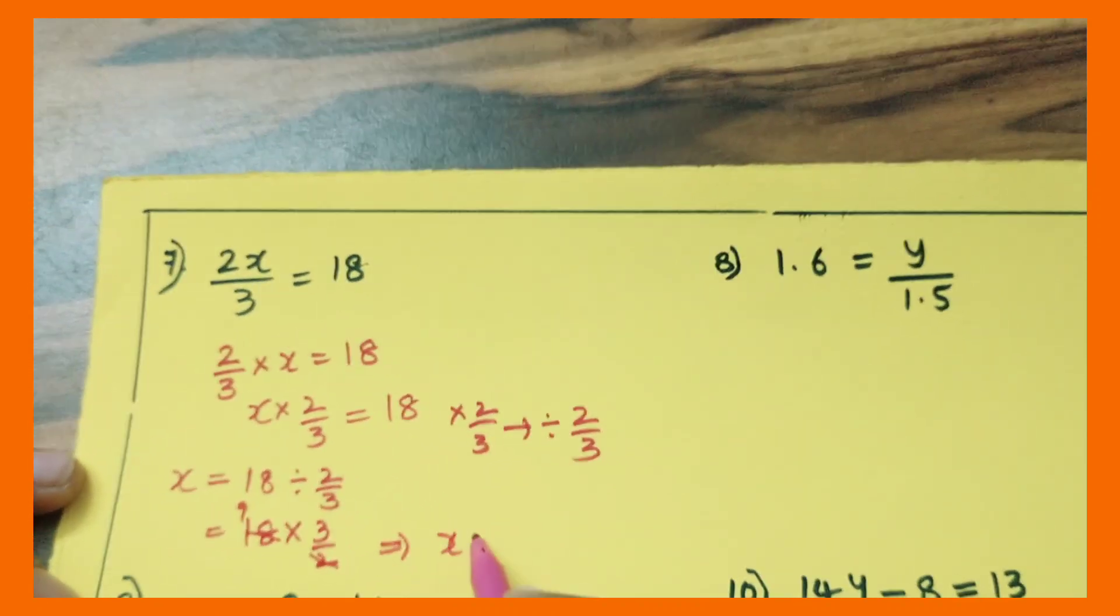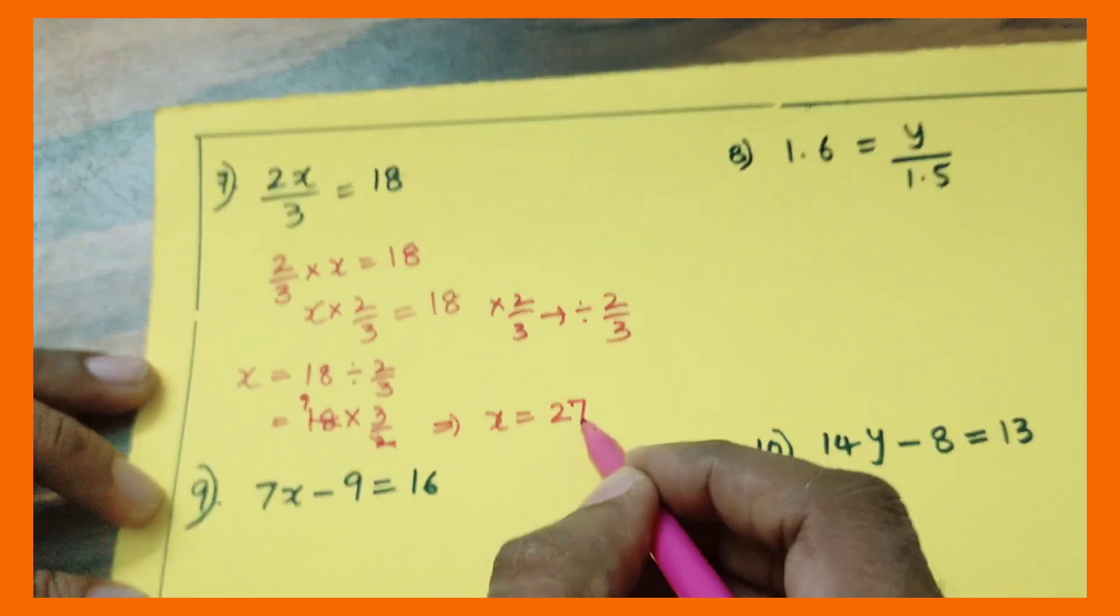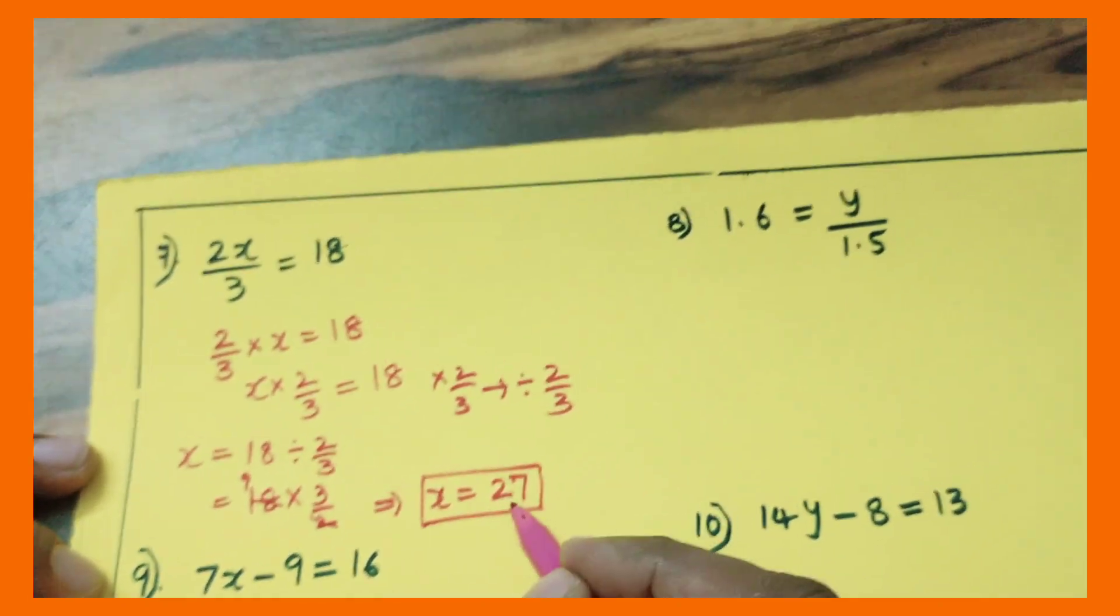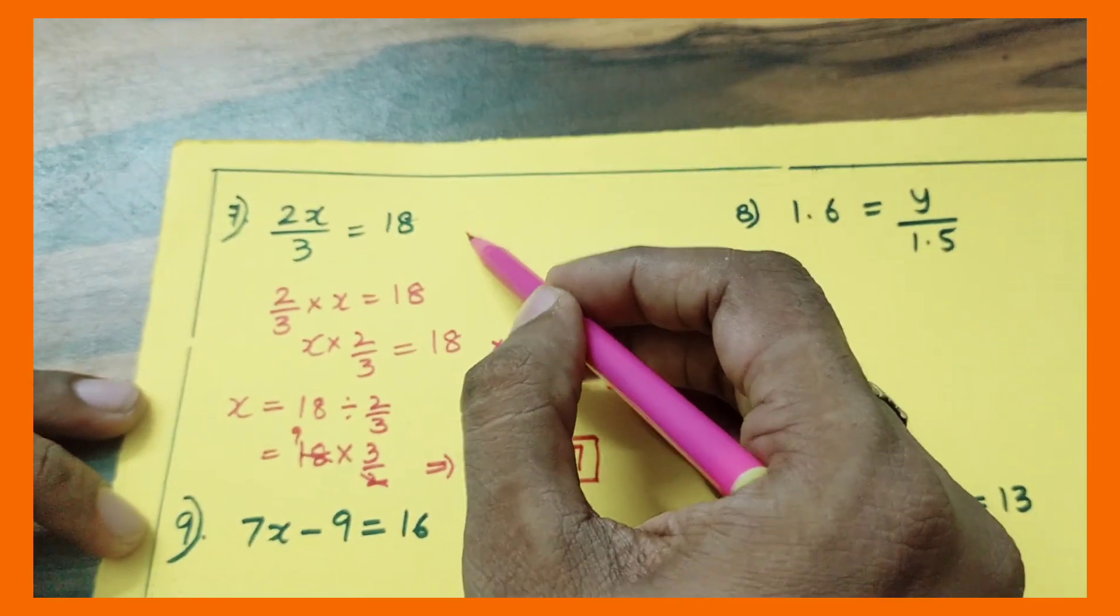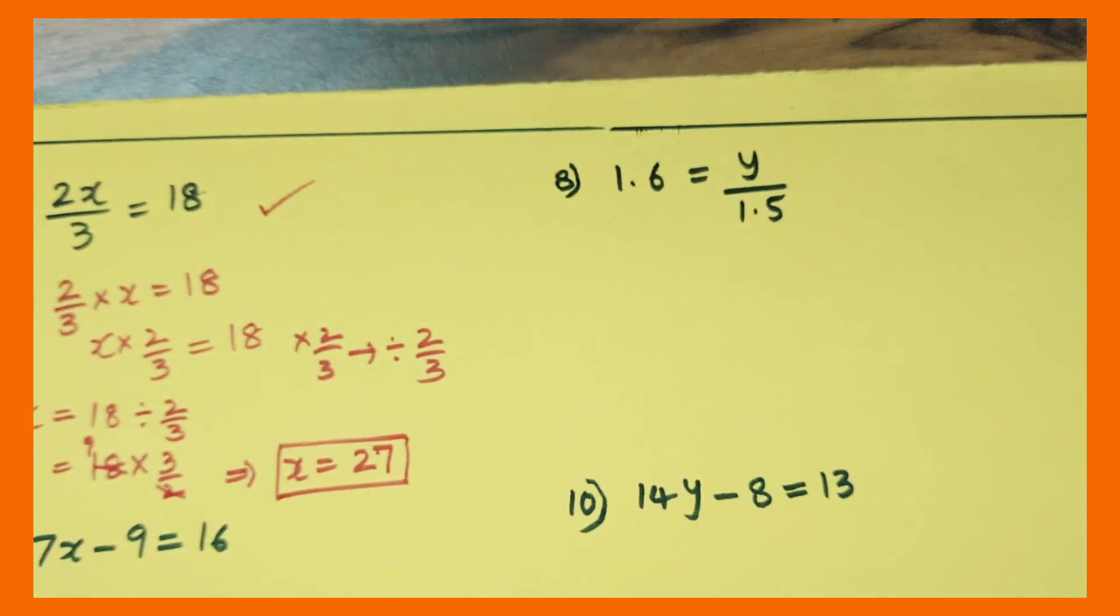That implies x is equal to 9 into 3 is equal to 27. x is equal to 27 is the solution of this equation.